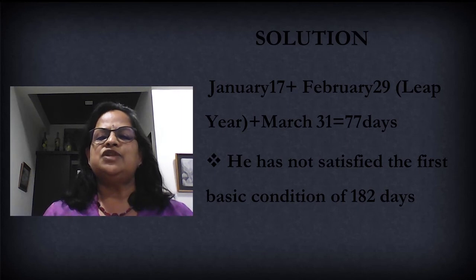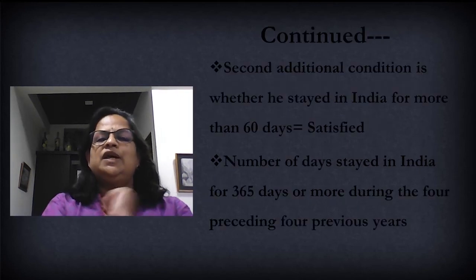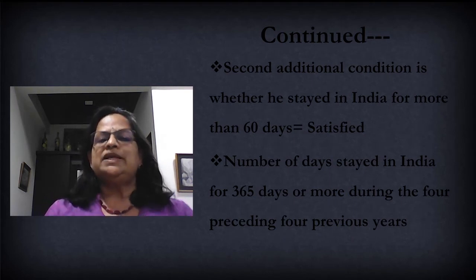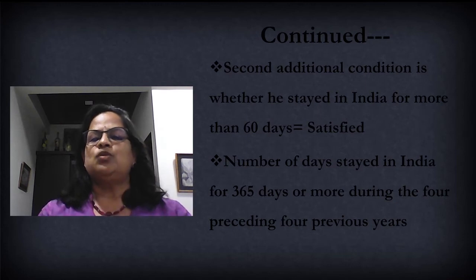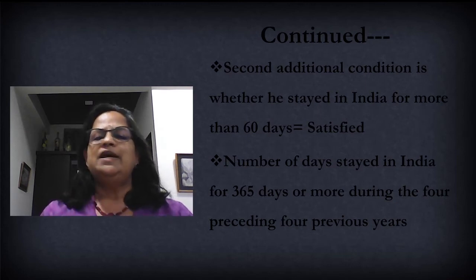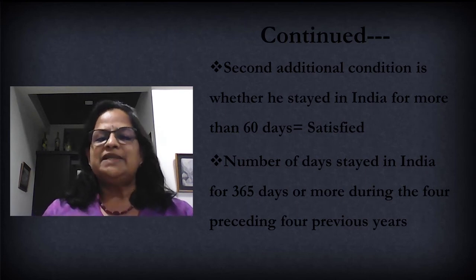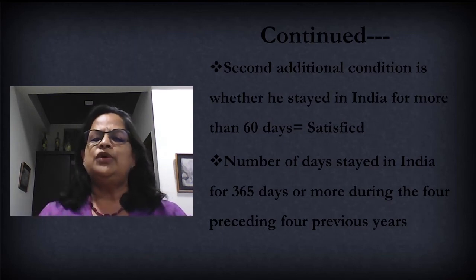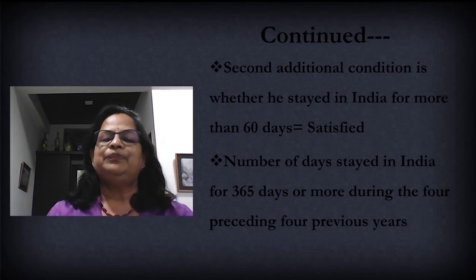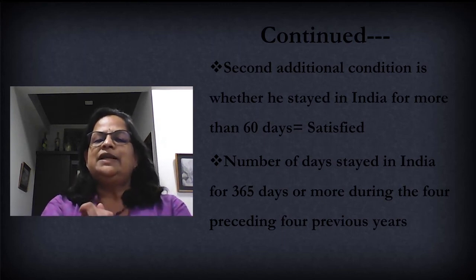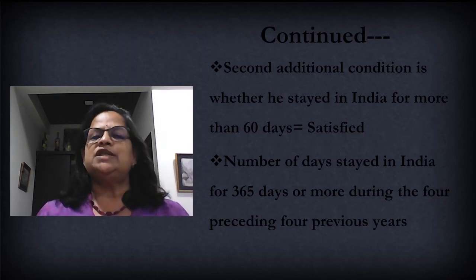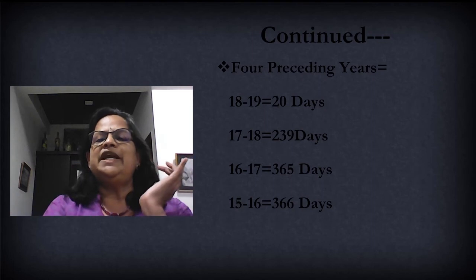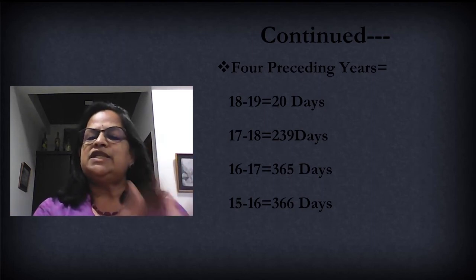Now we have to check whether he has satisfied the second basic condition — whether he was in India for 60 days or more. That is satisfied; he was here for 77 days. Next, number of days stayed in India for 365 days or more during the four immediately preceding previous years. He left India only in 2018; before that, for 20 years he was here. The current previous year is 2019–20, so the four preceding previous years are 2018–19, 2017–18, 2016–17, and 2015–16.